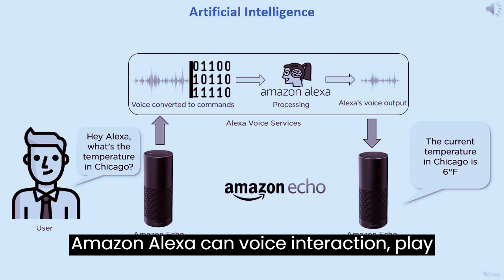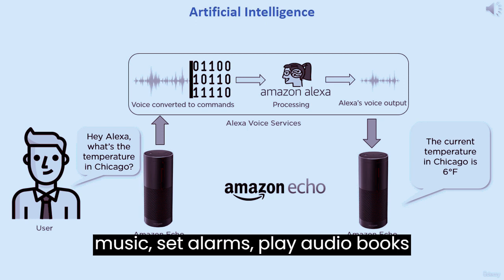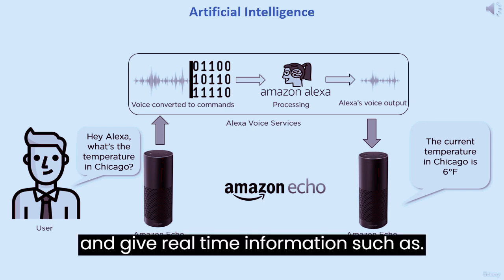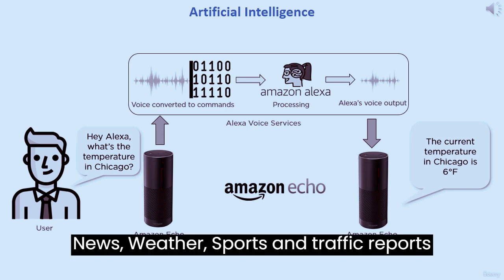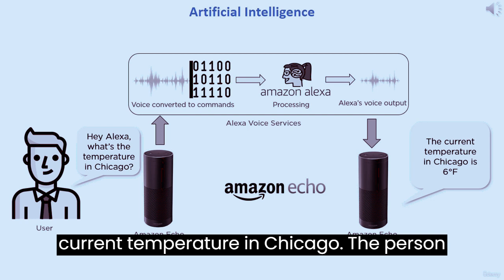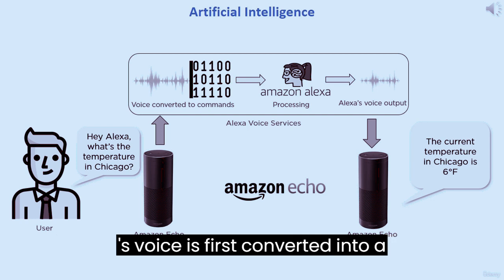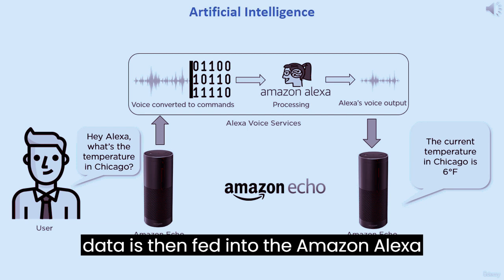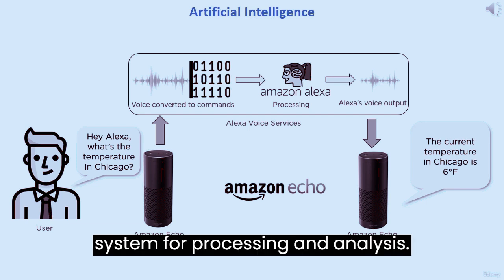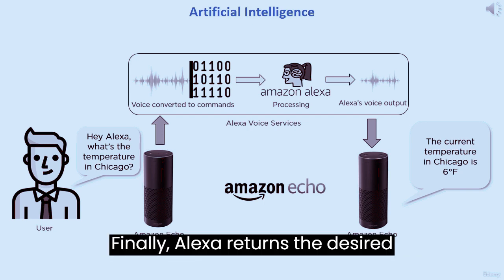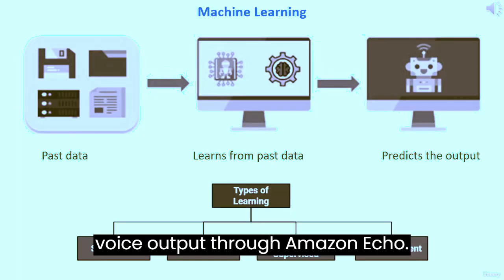Amazon Alexa can perform voice interaction, play music, set alarms, play audiobooks, and give real-time information such as news, weather, sports, and traffic reports. For example, a person wants to know the current temperature in Chicago. The person's voice is first converted into a machine-readable format. The formatted data is then fed into the Amazon Alexa system for processing and analysis. Finally, Alexa returns the desired voice output through Amazon Echo.